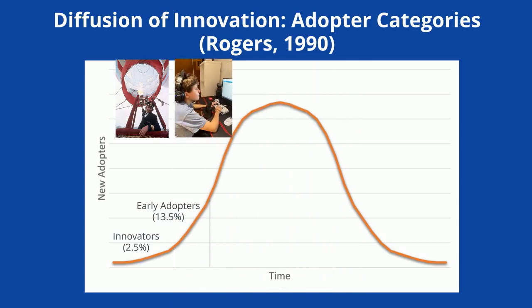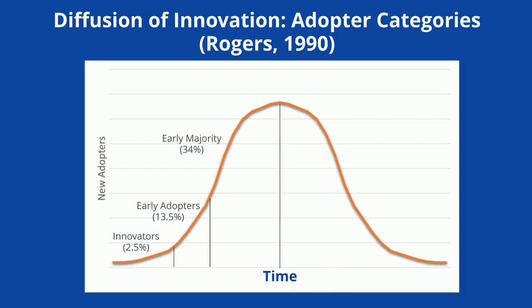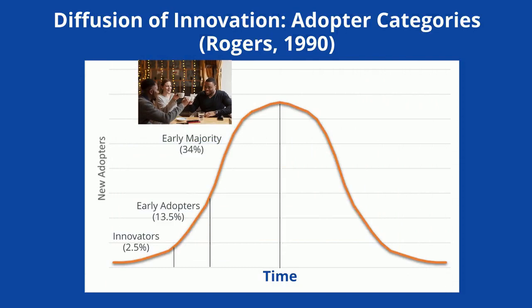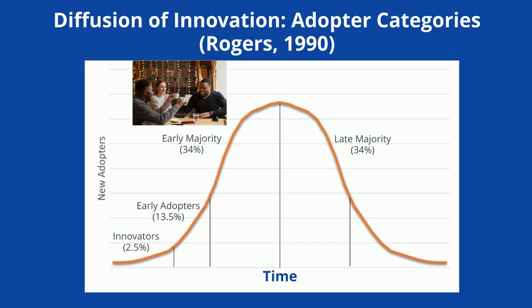The next 34% are the early majority. These people need to believe that a product is good and reliable before adopting, but they'll still adopt slightly before the average member of a social system — like your friend who always wants to meet at the hot new cafe that everybody's talking about. The 34% after that are called the late majority. These people approach innovation with a skeptical air and may not adopt until they feel pressure from their peers — like your mom getting on TikTok.